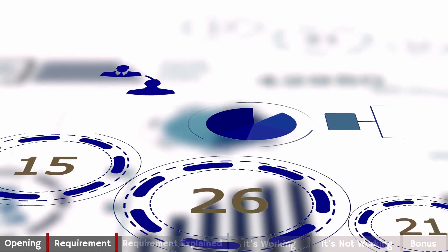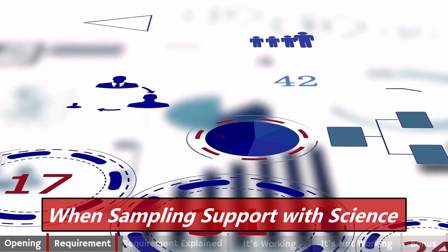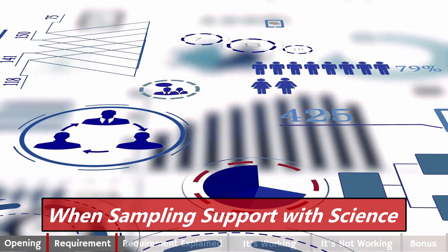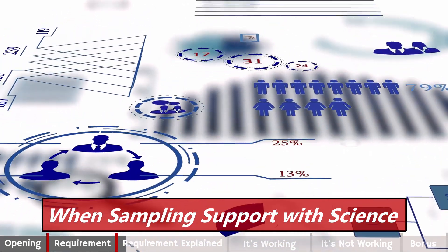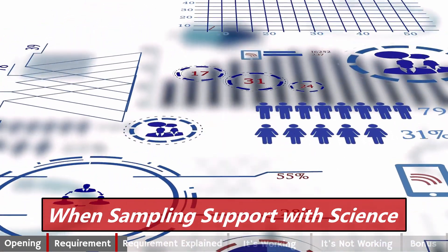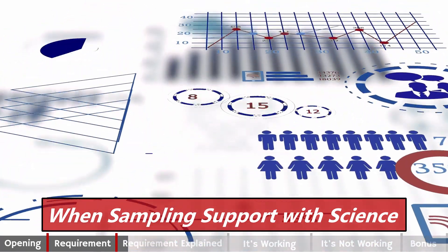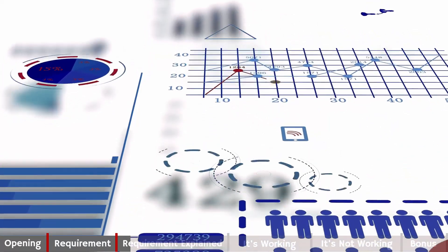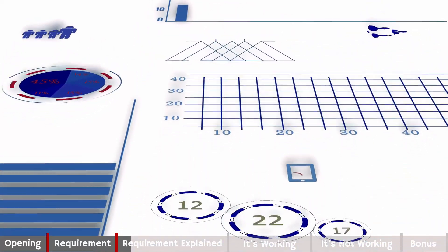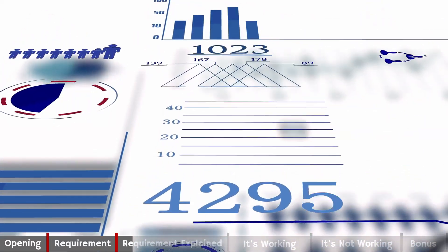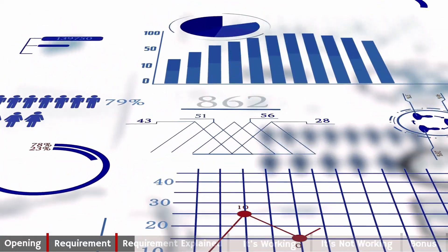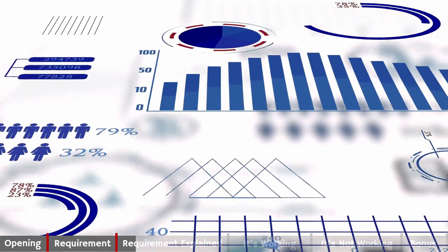Statistical Techniques in five words: when sampling, support with science. In order to clearly talk about statistical techniques, there are two terms that we have to understand first. Those terms are population and sample.